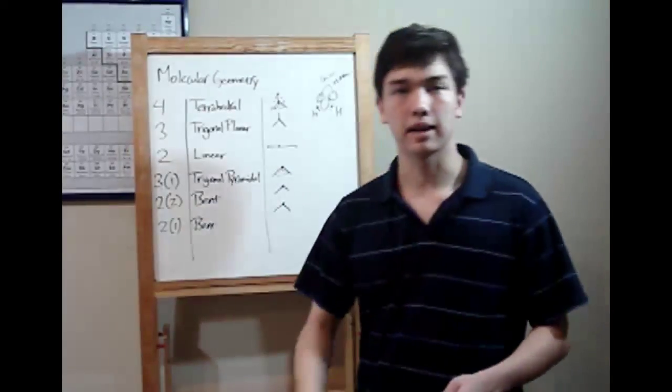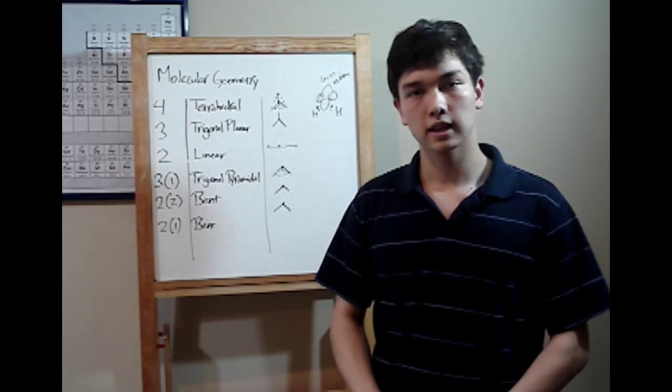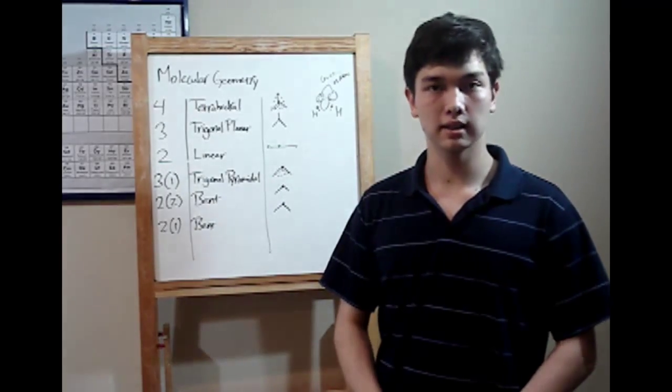To recap. When multiple elements bond together covalently, molecular geometries can result. If there are four atoms around a central atom, you get a tetrahedral shape. Three atoms, trigonal planar. Two, linear. If you've got three atoms in one lone pair, you get trigonal pyramidal. Two atoms in two lone pairs, bent. And two atoms in one lone pair, also bent. Okay, that's all for now. Again, I'm Bryant Prier. See you next time.